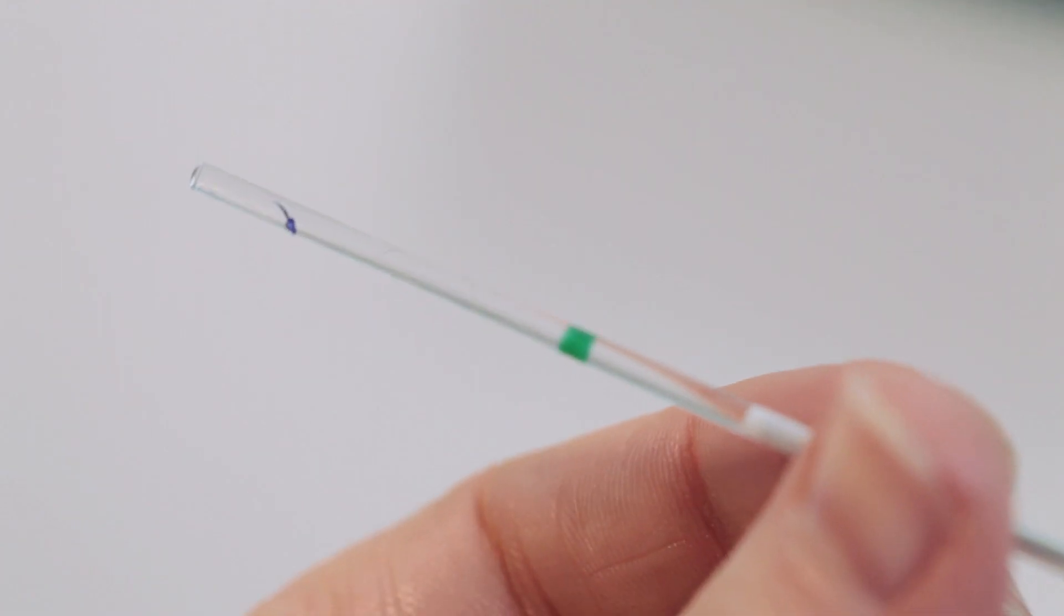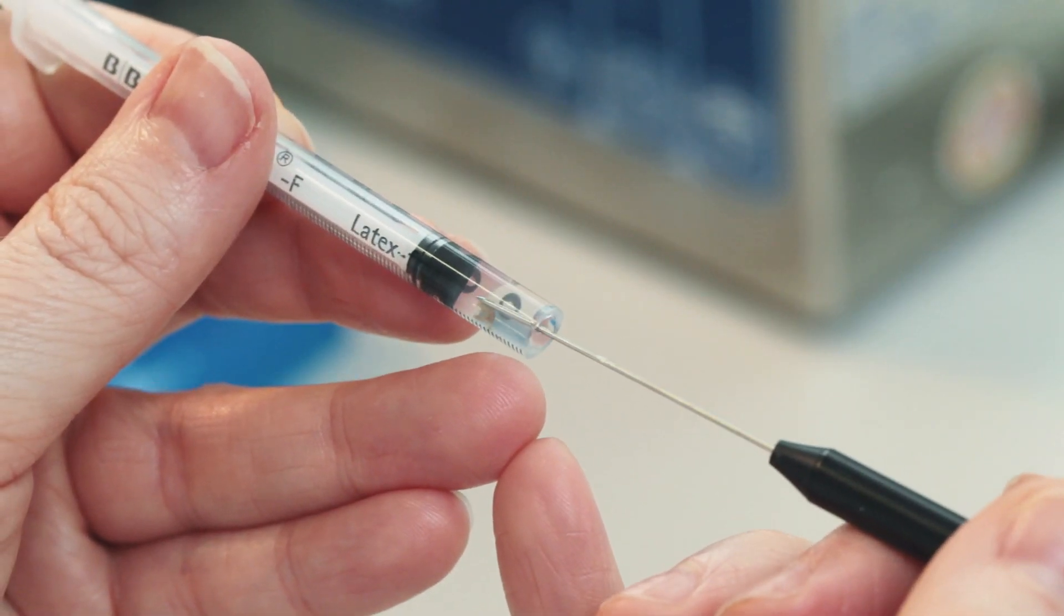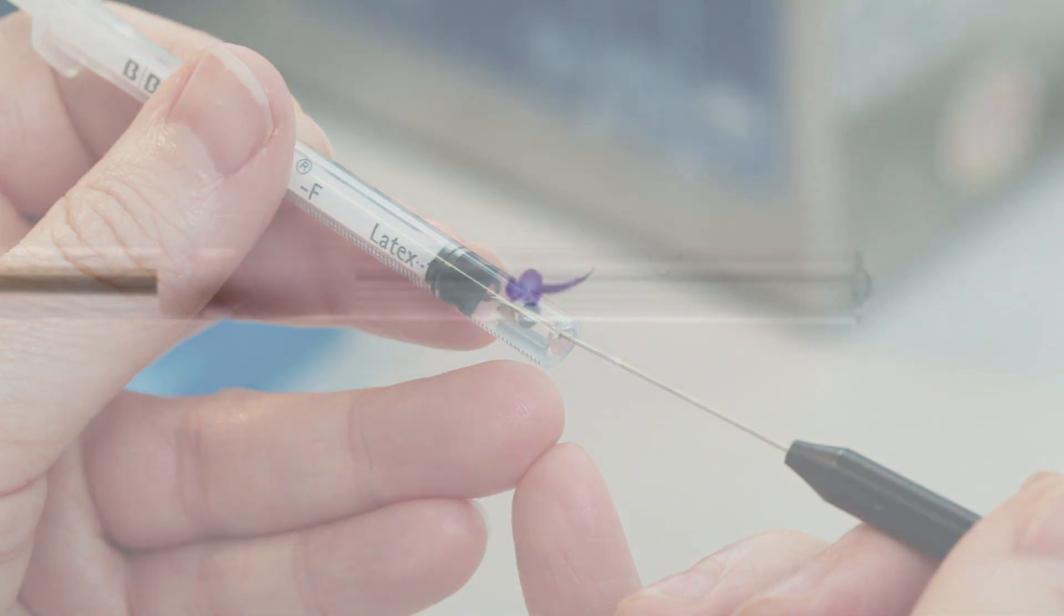Rotate the capillary to align your sample in the center of the cylinder. Finally, use a needle to position your specimen while the agarose hardens.